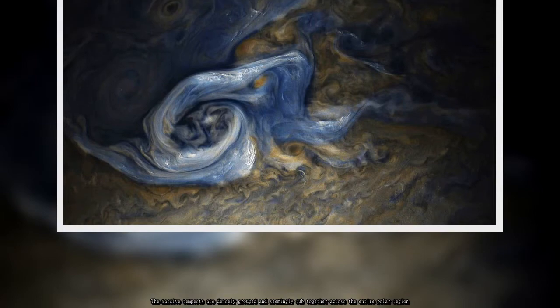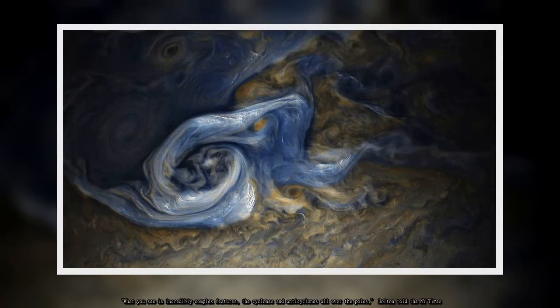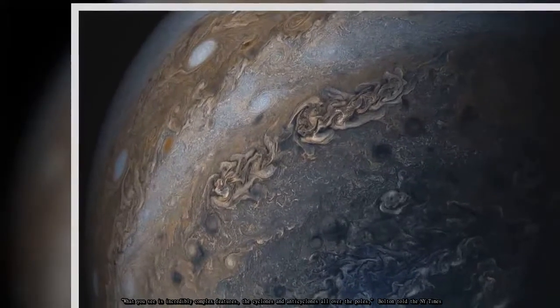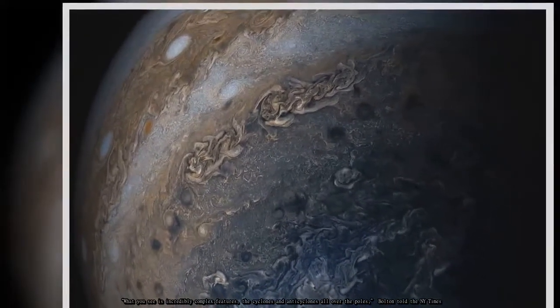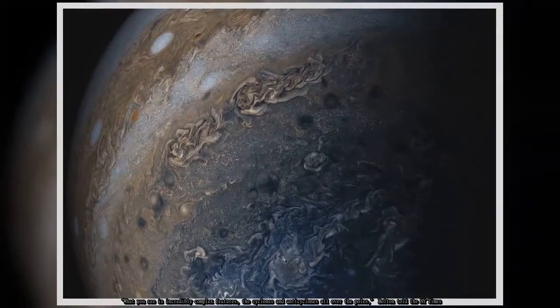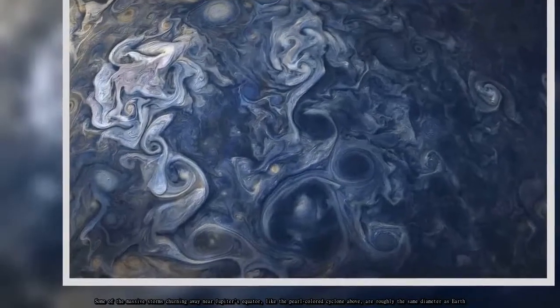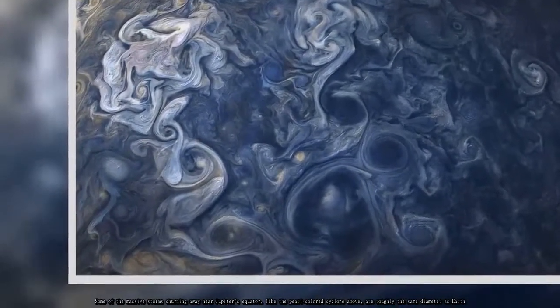What you see is incredibly complex features, the cyclones and anti-cyclones all over the poles, Bolton told the NY Times. Some of the massive storms churning away near Jupiter's equator, like the pearl-colored cyclone above, are roughly the same diameter as Earth.